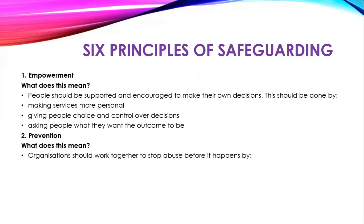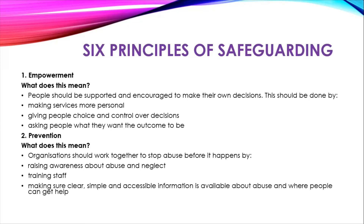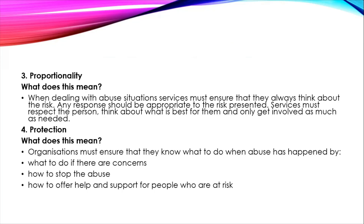The second principle is prevention: organisations should work together to stop abuse before it happens by raising awareness about abuse and neglect, training staff and making sure clear, simple and accessible information is available about abuse and where people can get help. The third principle is proportionality: when dealing with abuse situations, services must ensure they always think about the risk. Any response should be appropriate to the risk presented, respecting the person and only getting involved as much as needed.